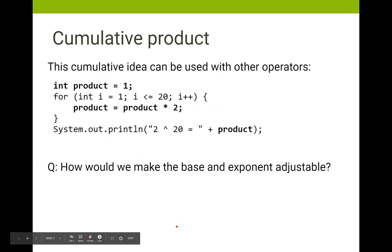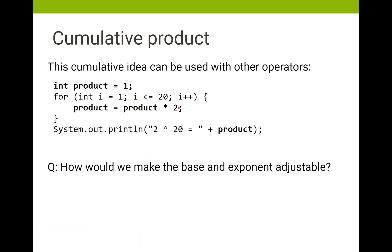We can also do cumulative products. We set our product equal to one, then loop 20 times where i is less than or equal to 20, and every single time we enter the loop we multiply product by 2. What this does is continually multiply by 2 a total of 20 times — giving us 2 to the 20th power. This is a cumulative product using a cumulative algorithm.